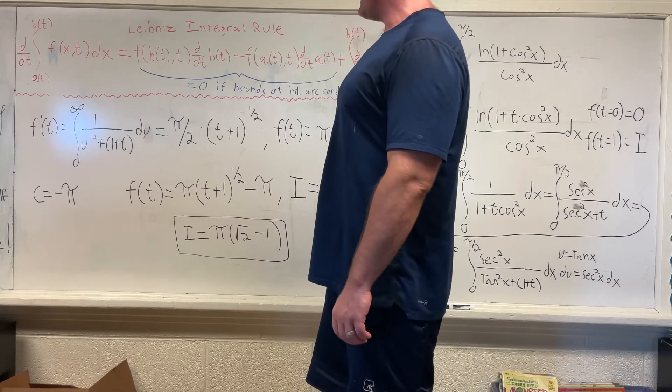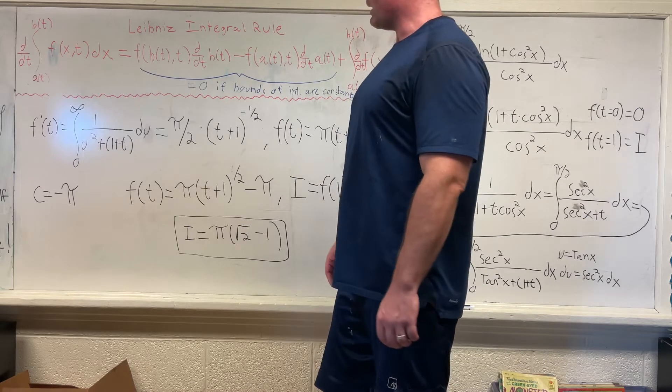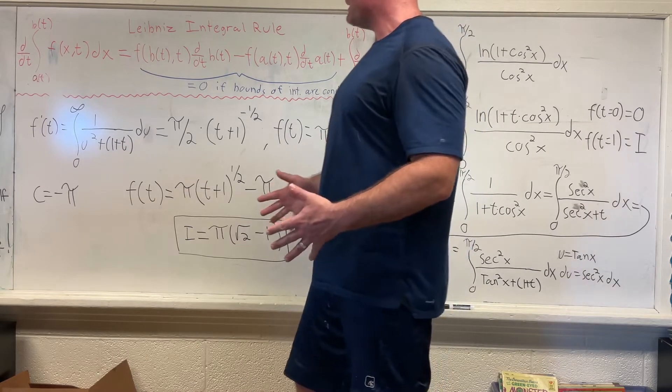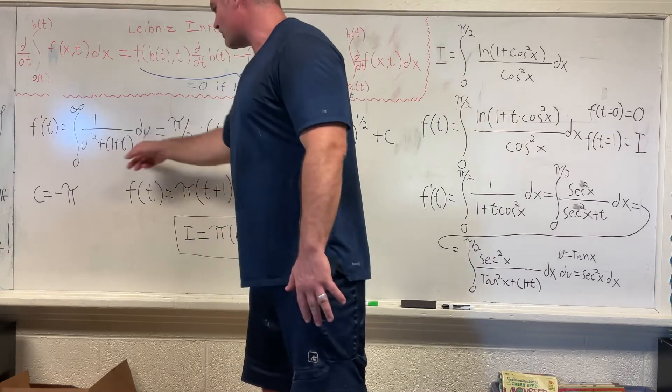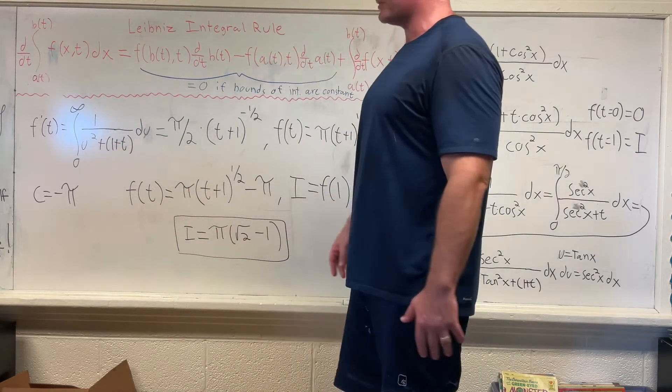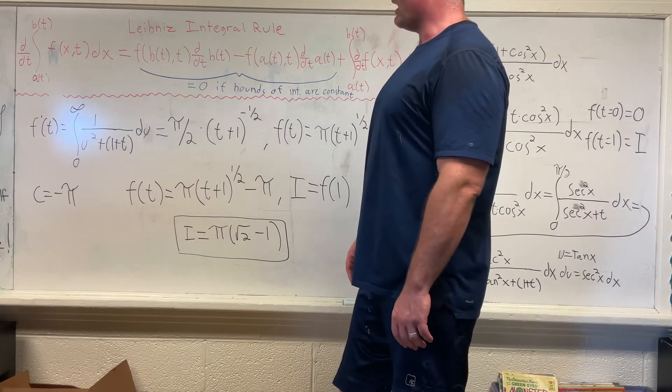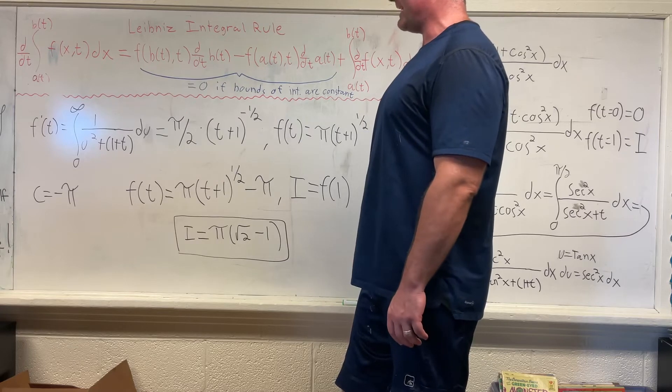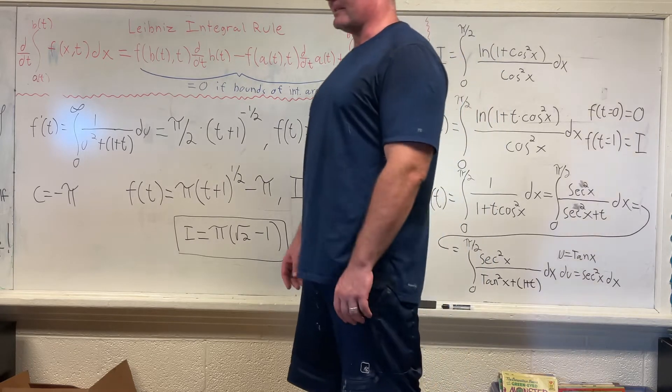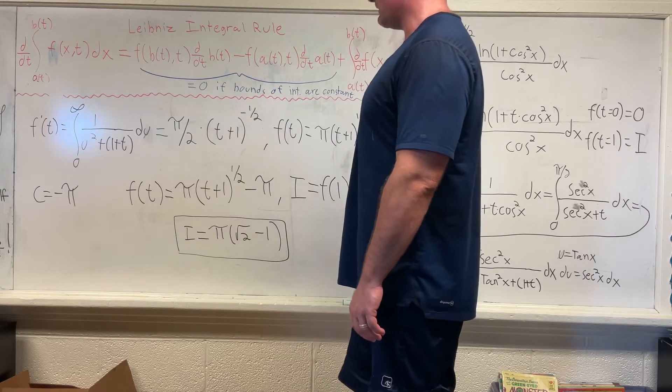And I wrote that (1 + t) in parentheses just to help people recognize this should be in a familiar form to most people watching this video. It's in the form 1/(u² + a²). Our a² in this case is the square root of (1 + t) squared. But that's a very common integral form.